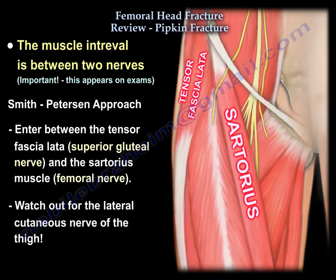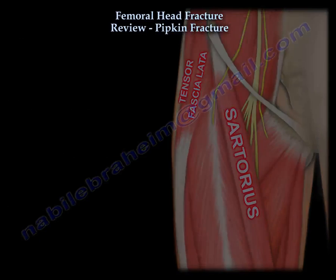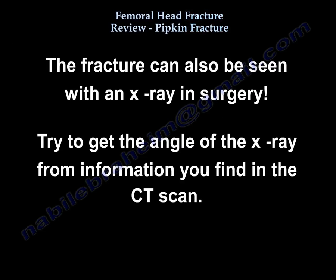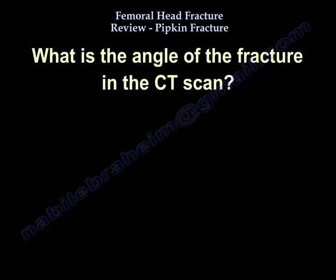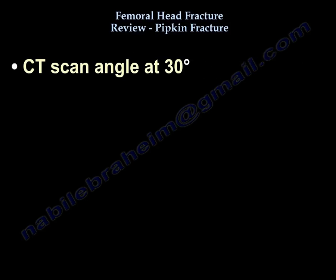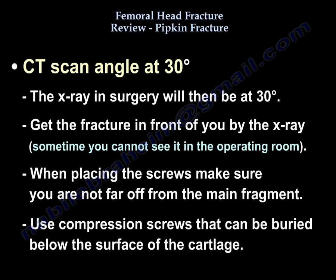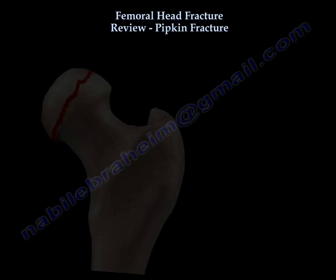Approach the hip and visualize the fracture, also using intraoperative X-ray. Use the fracture angle from the CT scan — for example, if the fracture is at 30 degrees on CT, angle the intraoperative X-ray at 30 degrees to identify the fracture precisely. This is important when the fracture is hard to see in the operating room. Use compression screws buried below the cartilage surface — Herbert Whipple screws are recommended.